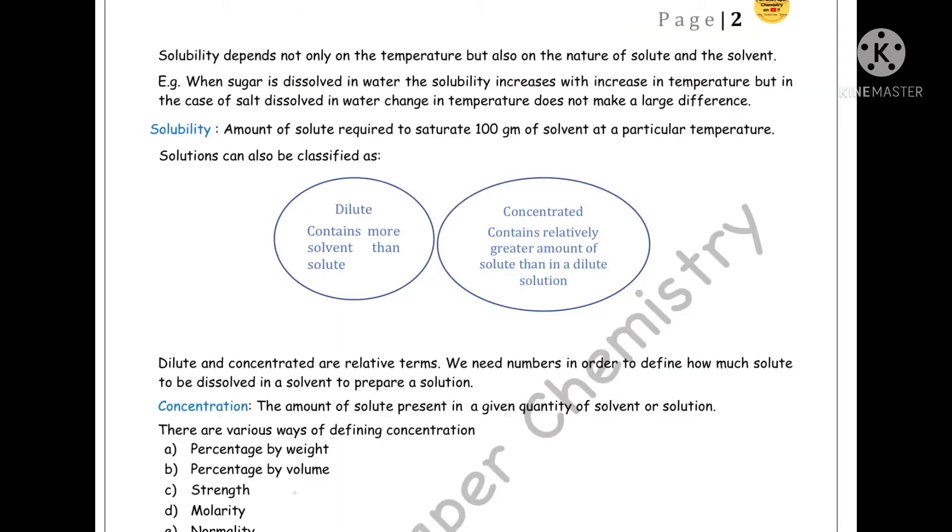Now, I have been using the word solubility again and again. And what is this solubility that I am talking about? Solubility is the next thing on the chapter. Technically speaking, solubility is the amount of solute required to saturate 100 grams of solvent at a particular temperature. Simply putting, how much of food you should have in order to satisfy yourself at that particular point of time. That's it. Not super saturated. Saturated. And how much are we talking about? 100 grams of the solvent at a particular temperature.